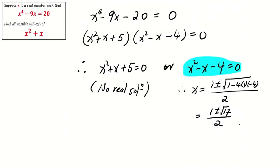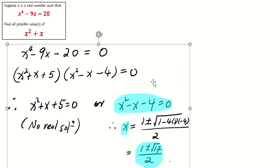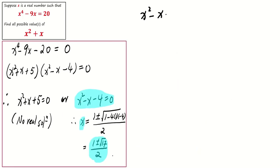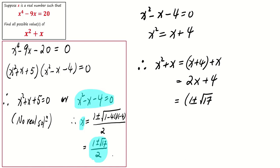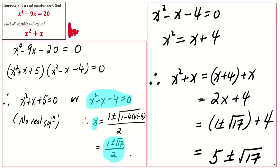we start with the equation x^2 - x - 4 = 0, which implies that x^2 = x + 4. Hence, x^2 + x = 2x + 4, which is equal to 5 ± √17. So, the answer to this problem is 5 ± √17.